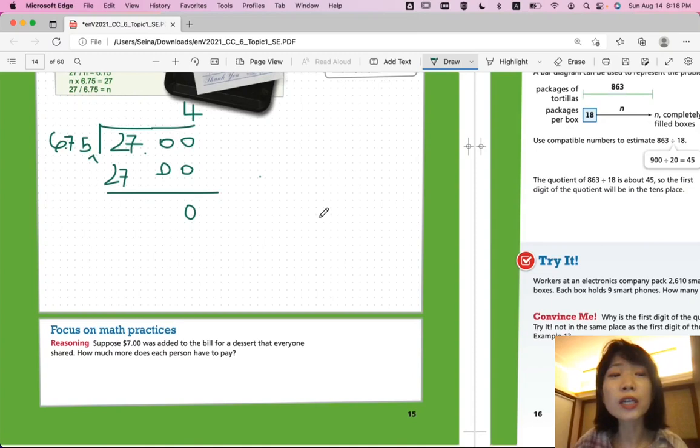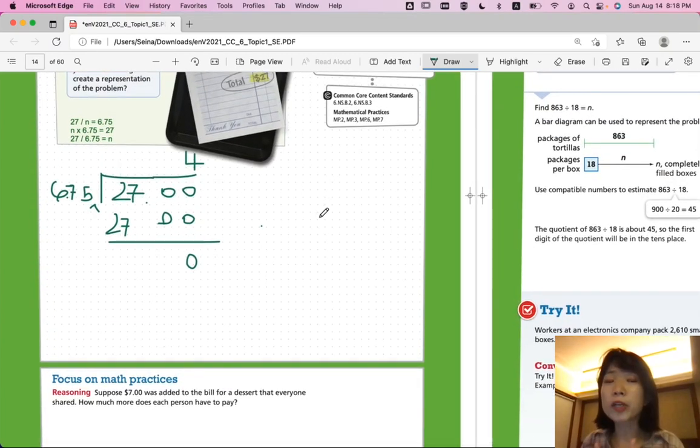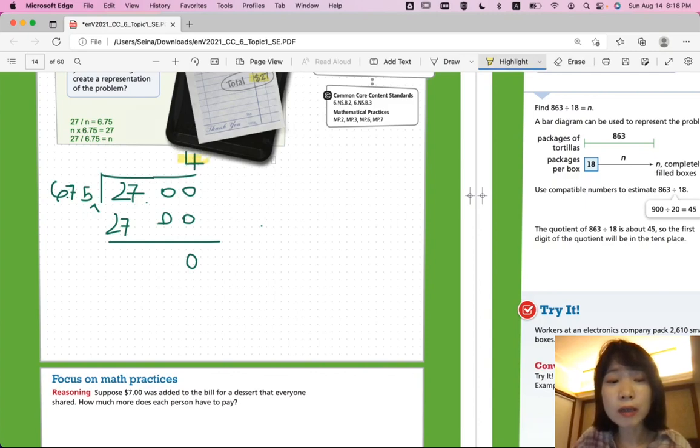How much more does each person have to pay? So, additionally, from $6.75, how much more would one person pay? So, $7 is the extra payment that we didn't pay yet. So, we just have to divide that equally by the number of people we have. Fortunately, we already figured out the number of people above. It's four people, right?